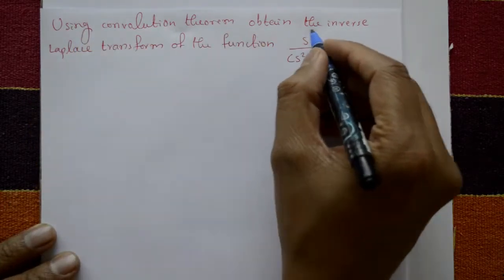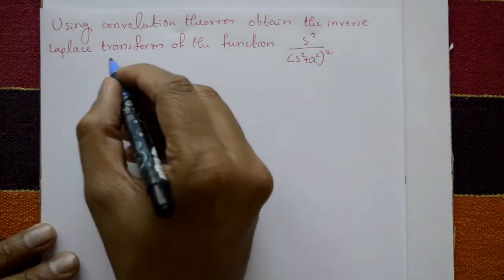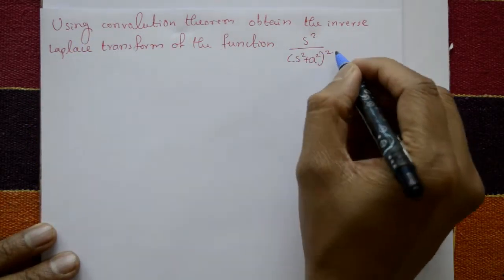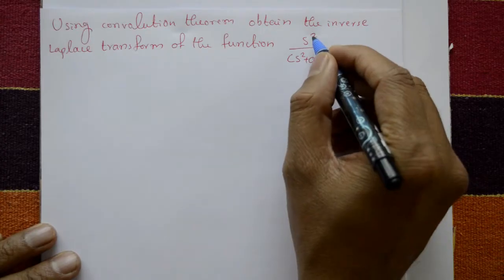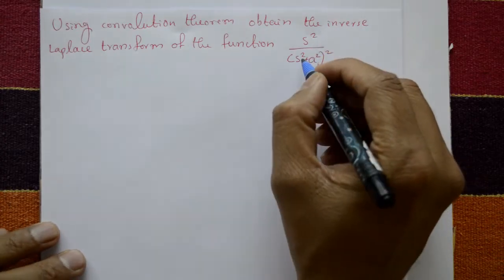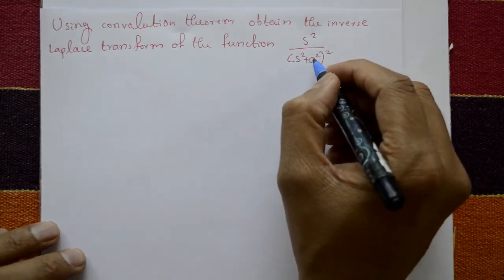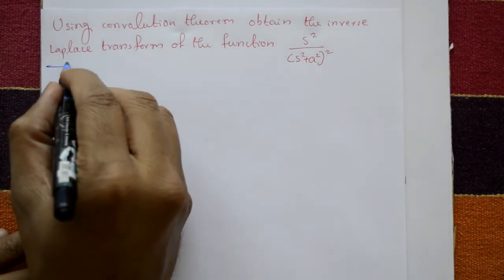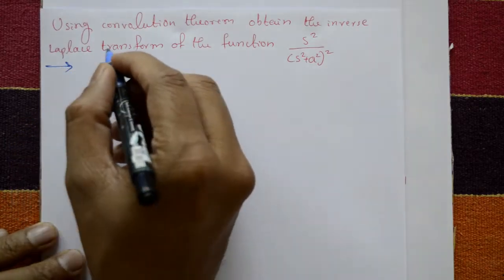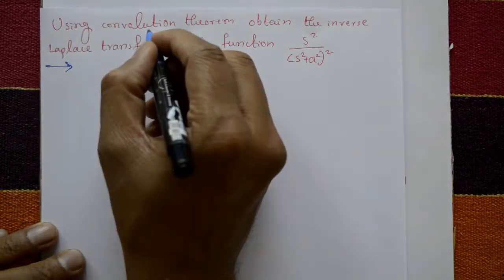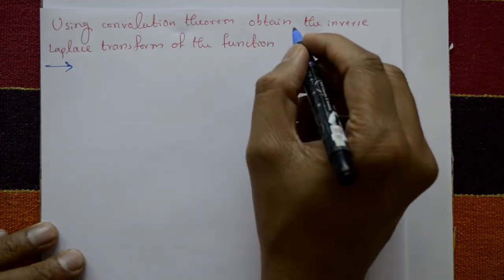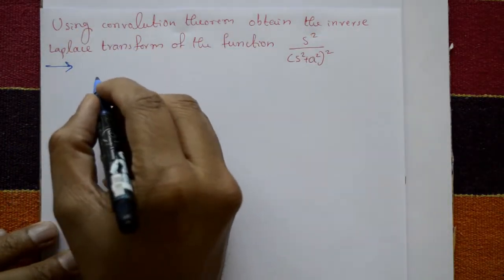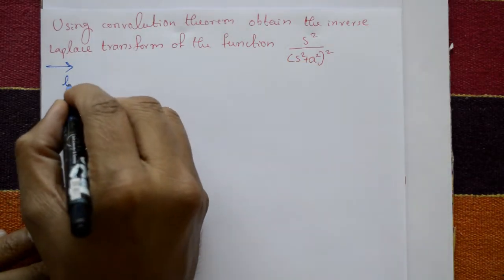Using the convolution theorem, obtain the inverse Laplace transform of the function s² upon (s² + a²), whole square. Solution: using the convolution theorem, find the inverse Laplace transform.